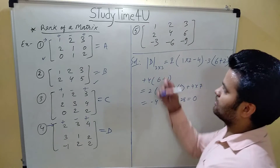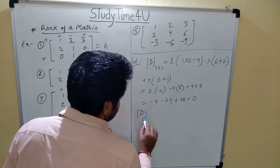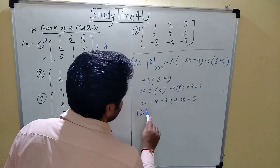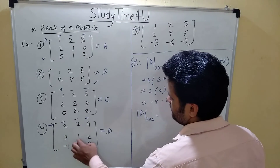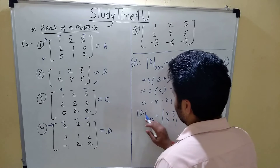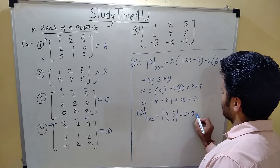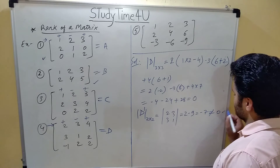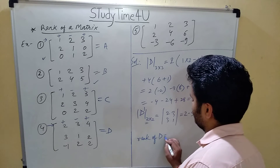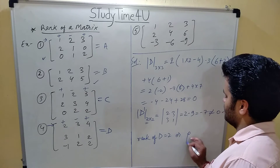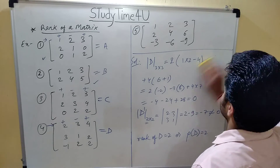Since the 3×3 determinant is 0, this is not the rank. We now try order 2, checking 2×2 submatrices. Taking entries 2, 3, 3, 1: solving 2 into 1 minus 3 into 3 = 2 minus 9 = minus 7, which is not equal to 0. Therefore rank of D is 2.